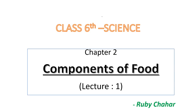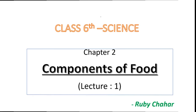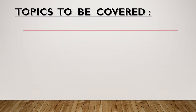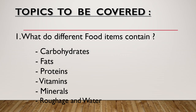This is Class 6th Science, Chapter 2, Components of Food, Lecture No. 1. In this video, we will be covering the topic: What do different food items contain? Basically, we will be learning about the different nutrients or components, namely carbohydrates, fats, proteins, vitamins, minerals, and two additional components — roughage and water.